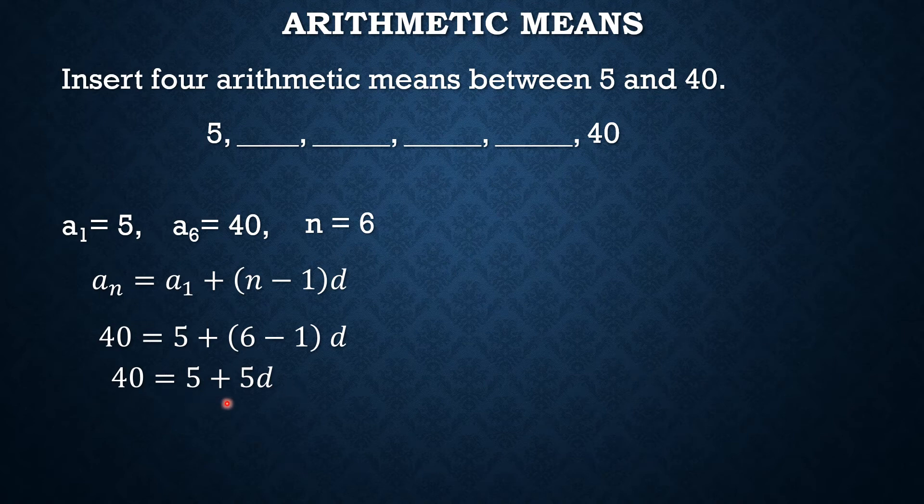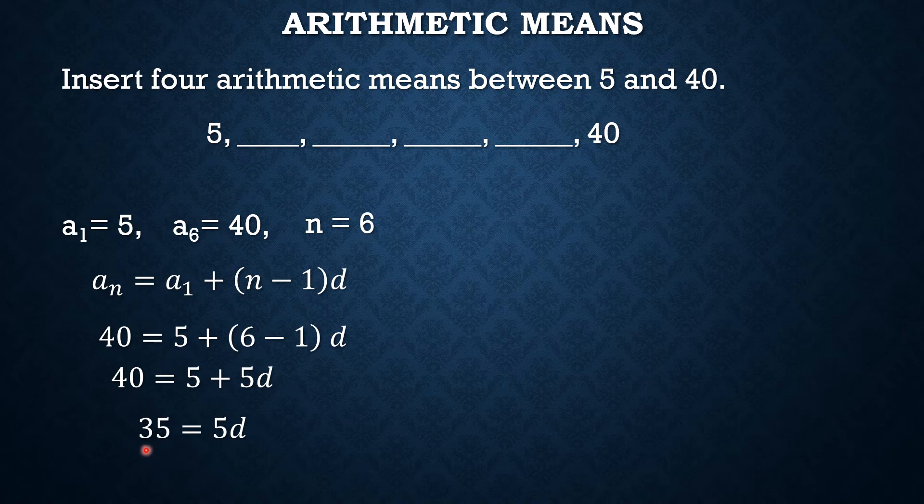By adding negative 5 to both sides of the equation to eliminate 5, we now have 35 is equal to 5d. And then, by dividing both sides by 5, we now have the value of 7 as our common difference.